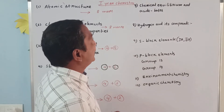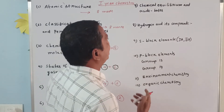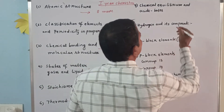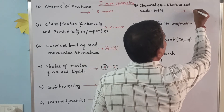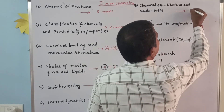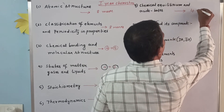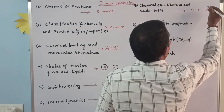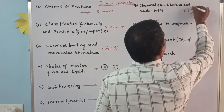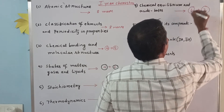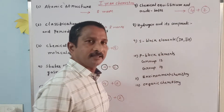Seventh unit: chemical equilibrium and acids and bases. The weightage is six marks — one four-mark question and one two-mark question.